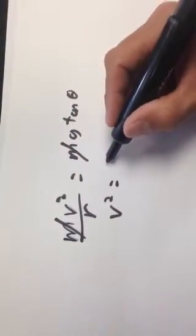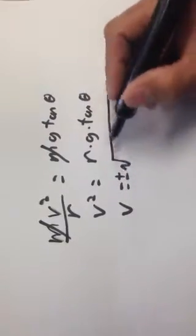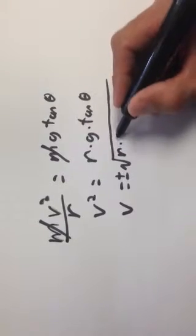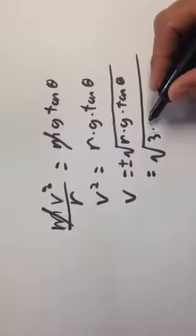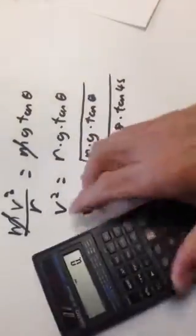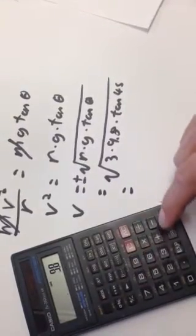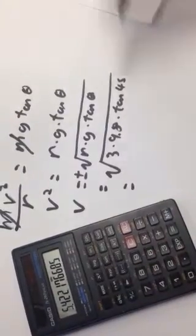Cancelling M from both sides, V squared equals R times G times tan theta, making the velocity equal to the square root of R times G times tan theta — the plus or minus because this would also work going backwards. Plugging in our values: theta is 45 degrees, R is 3 meters, and G is 9.8 meters per second squared. That gives the square root of 3 times 9.8 times tan 45, which equals 5.4 meters per second.